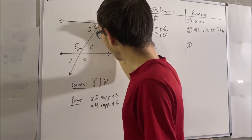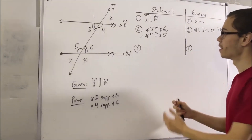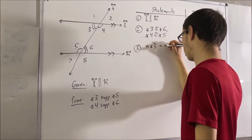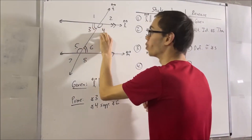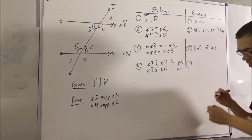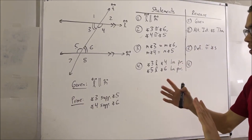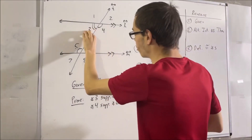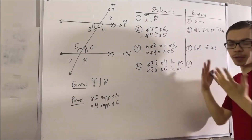Angle 4 is congruent to angle 5, and angle 3 is congruent to angle 6. For step 3, we're going to apply the definition of congruent angles. Congruent angles have equal measures, so the measure of angle 3 equals the measure of angle 6, and the measure of angle 4 equals the measure of angle 5. Another thing to notice about this figure is that angle 3 and angle 4 form a linear pair, and angle 5 and angle 6 form a linear pair — by the definition of a linear pair, which is a pair of angles that form a line. Angle 3 and angle 4 form line L, and angle 5 and angle 6 form line M.